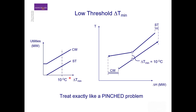Let's look at the case where we have a low threshold delta T min that is actually well below the most normal delta T min used in our processes, like 10 degrees centigrade. If we draw our composite curve we can see that we have requirements for both the steam — the hot utility — and the cold utility, if we are designing this process at a delta T min of 10 degrees centigrade. So although this is a threshold problem, the heat exchanger network design in this case can be treated exactly as a pinch problem.